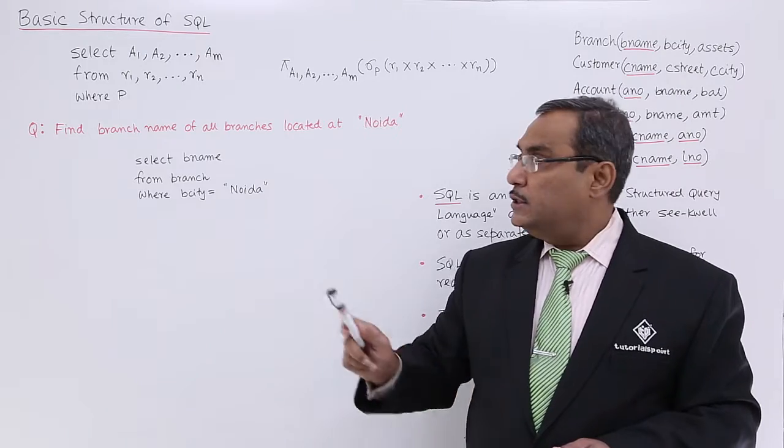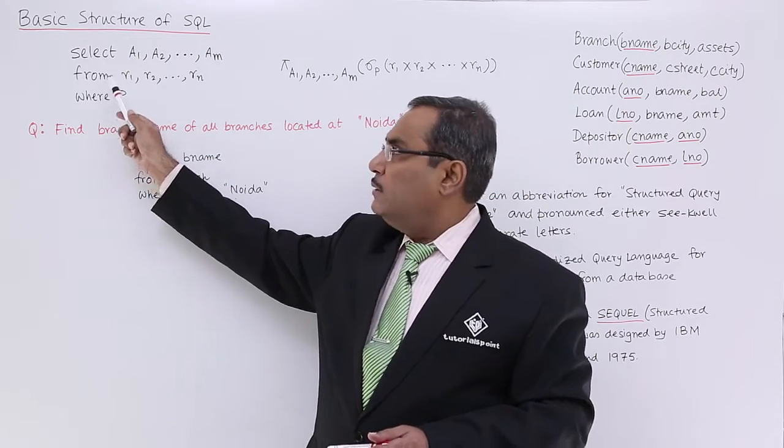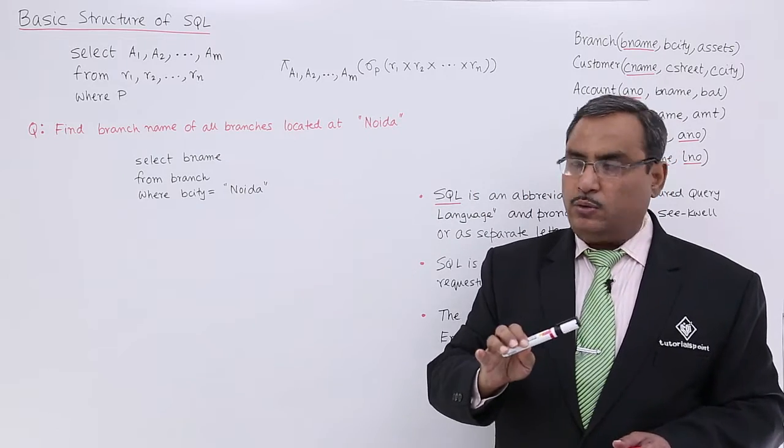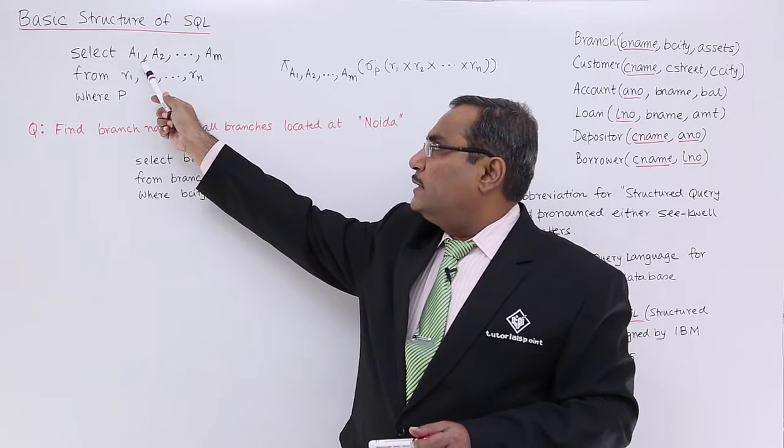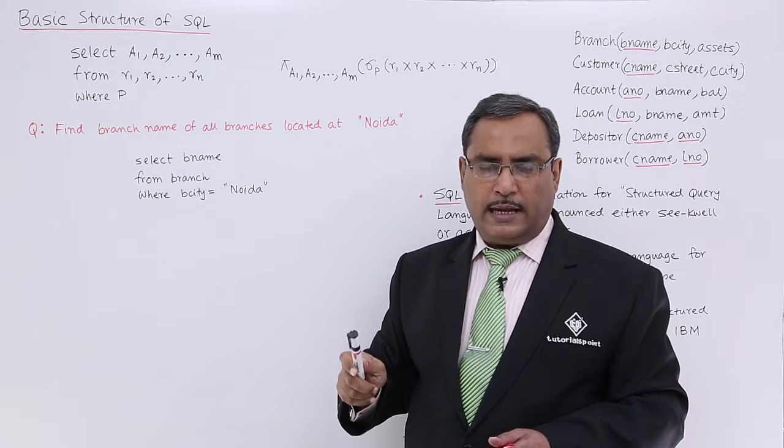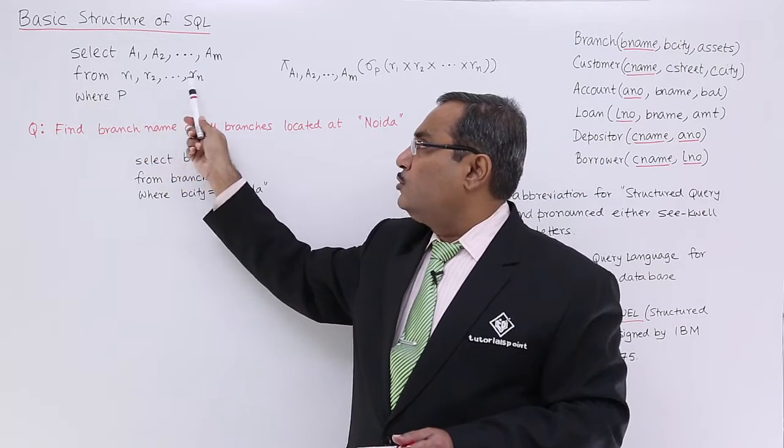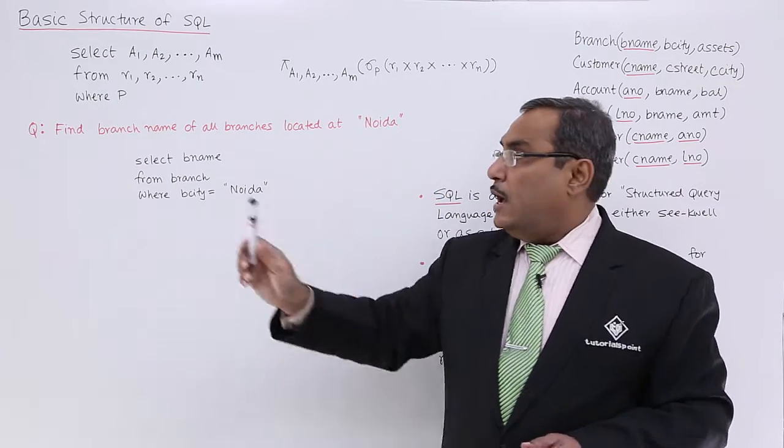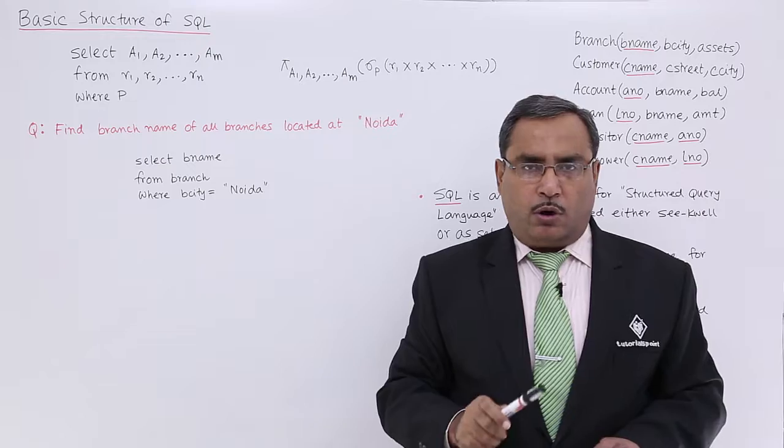They cannot be altered. Here WHERE is optional, but SELECT and FROM they are mandatory to be present in the SQL query. And all these are nothing but the attribute names, that is A1 to Am are attribute names, and R1 to Rn are the relation names or table names, and P stands for the predicate or condition.